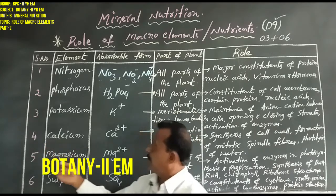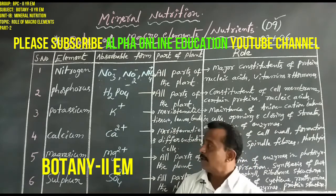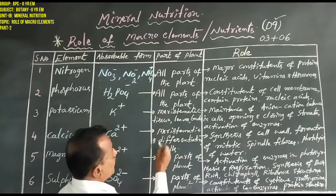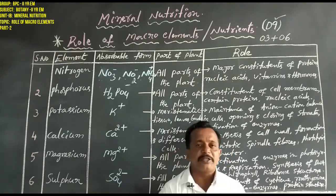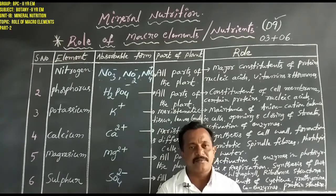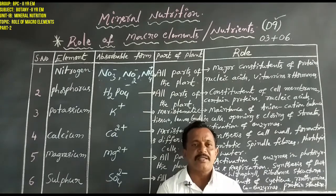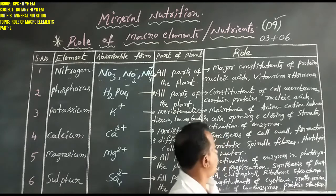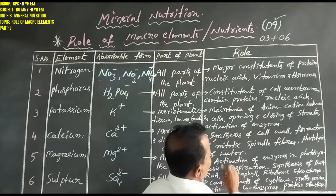The fourth macro element is calcium. Calcium is absorbed in the form of Ca2⁺. It is utilized in meristematic tissues and in the differentiation of cells. The roles of calcium include formation of the cell wall, formation of mitotic spindle fibers, and photolysis of water.